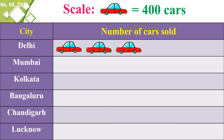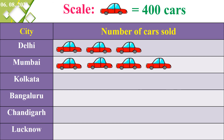Next, Mumbai sold 1,800 cars. Dividing 1,800 by 400, the quotient is 4 and the remainder is 200. So we draw 4 full cars and 1 half car: 1, 2, 3, 4, and a half car. Because 4 into 400 is 1,600, and 1,600 plus 200 (half car) gives 1,800.